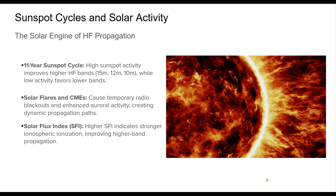Sunspot cycles and solar activity significantly influence HF propagation. The 11-year sunspot cycle alternates between solar maxima and minima, affecting which bands are more reliable. During the maxima, higher bands like 15, 12, and 10 thrive. In contrast, minima often enhance lower band performance, such as 80 and 160 meters.